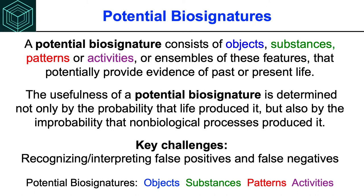Accordingly, the term potential biosignatures has come into common use, with a similar but key difference in definition: a potential biosignature consists of objects, substances, patterns, or activities, or ensembles of these features that potentially provide evidence of past or present life. The key word is 'potentially' — it doesn't mean you have found life. The usefulness of a potential biosignature is determined not only by the probability that life produced it, but also by the improbability that non-biological processes produced it, along with the key challenges of false positives and false negatives.